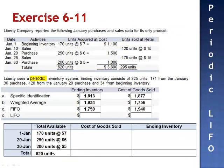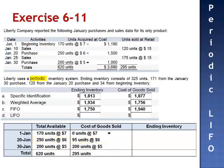Using Periodic LIFO, we calculate cost of goods sold at the end of the period and remove the units in reverse chronological order. The last 295 units to come into the database will be expensed as cost of goods sold: 200 units at $5 per unit from the January 30th purchase, and 95 units from the January 20th purchase. 95 multiplied by $6 is $570, and 200 multiplied by $5 is $1,000. Cost of goods sold is $1,570.